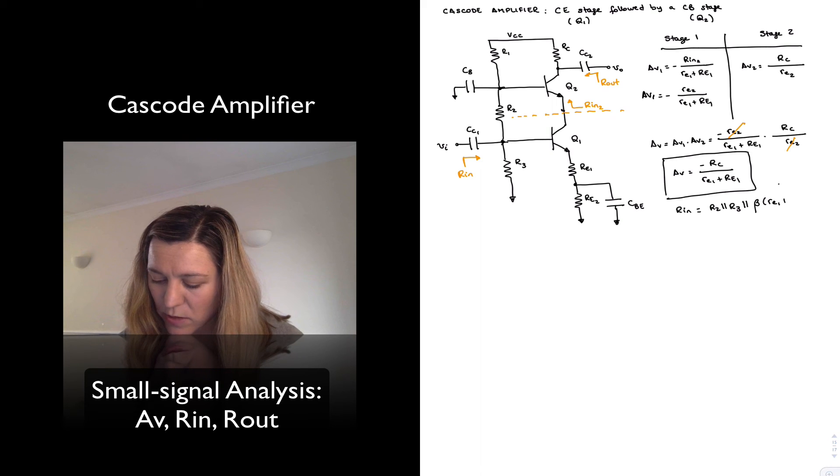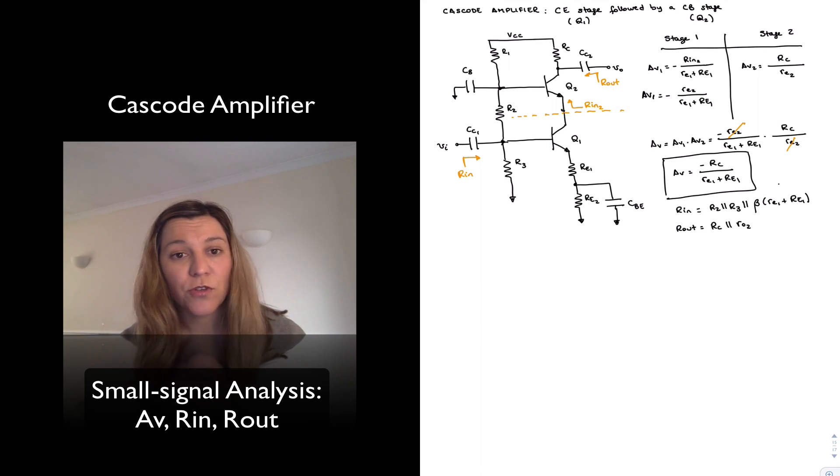And my output resistance, in this case, is going to be equal to the resistance looking into the output, which is going to be Rc in parallel with R3 in parallel with little ro for transistor Q2.